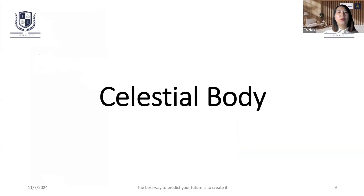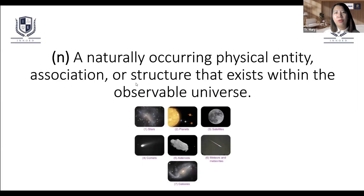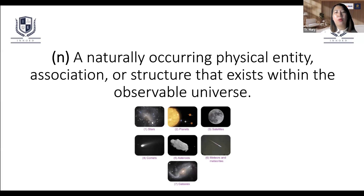So, it's the celestial body. The celestial body is the universe. The celestial body includes the stars, planets, jewelry, satellites, etc.